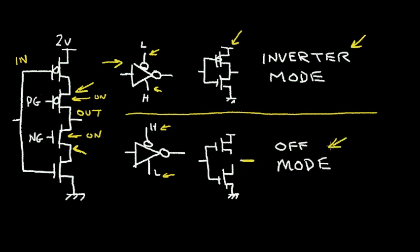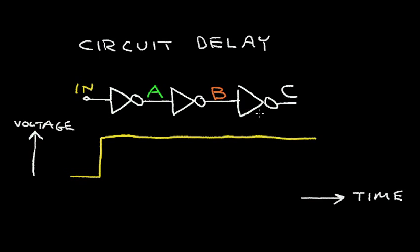Before we describe the operation of the D flip-flop, let's present the concept of circuit delay. Here, I've drawn three inverters in series. I've labeled the input of the first inverter N, and the output of the first inverter is labeled A, and the output of the second inverter is labeled B, and the final output is labeled C. So let's analyze what happens as I change the input voltage as a function of time.